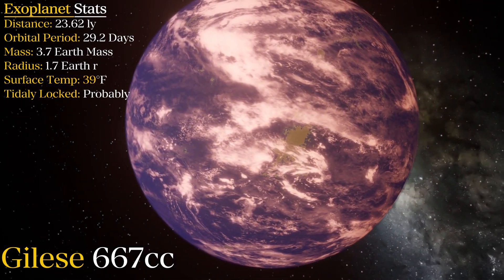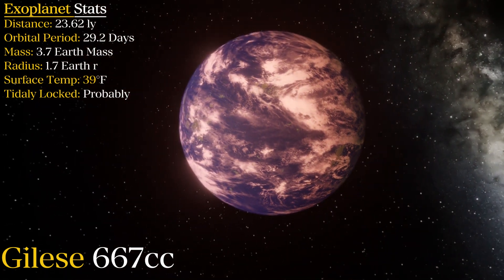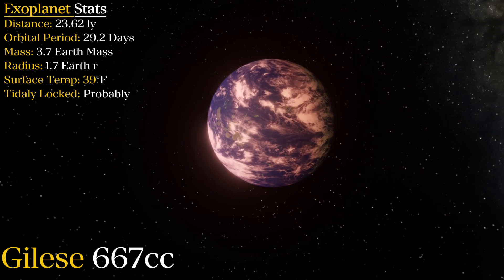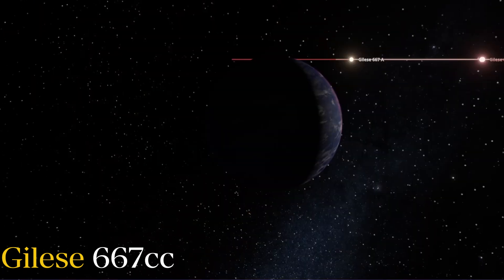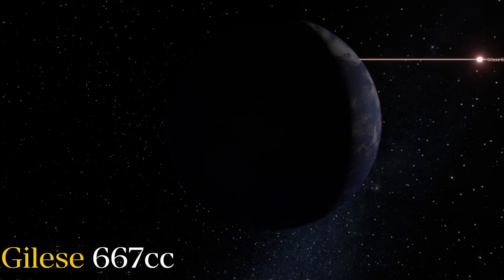It is heavier than Earth with a minimum mass of 3.7 Earth masses. The equilibrium temperature of Gliese 667 cc is estimated to be 39.6 degrees Fahrenheit, or something in Celsius, I don't know I'm American, and it is expected to have a radius of 1.5 Earth radii. Of course, this is dependent upon its composition, which is currently unknown.